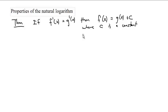The theorem says that if the derivative of f is the same as the derivative of g, then f and g differ by a constant. That is, f(x) is g(x) plus some constant. This only works if they're continuous functions capable of being integrated.